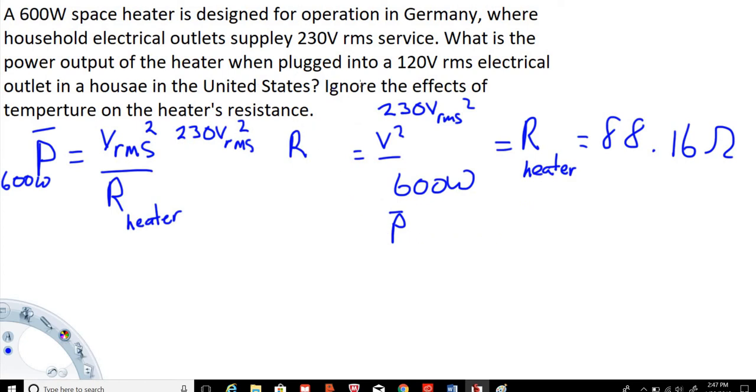And the question is asking, what is the power output of the heater when it's plugged in a household in the United States? So we're looking for power in the U.S. And that is equal to, like we have up here, voltage RMS squared divided by the equivalent resistance of the heater.